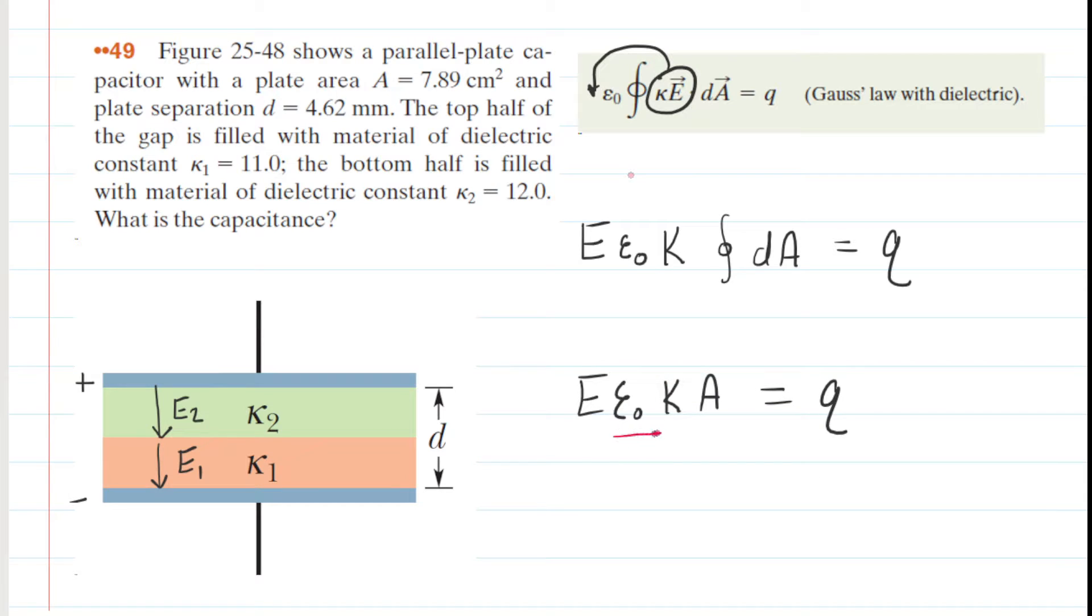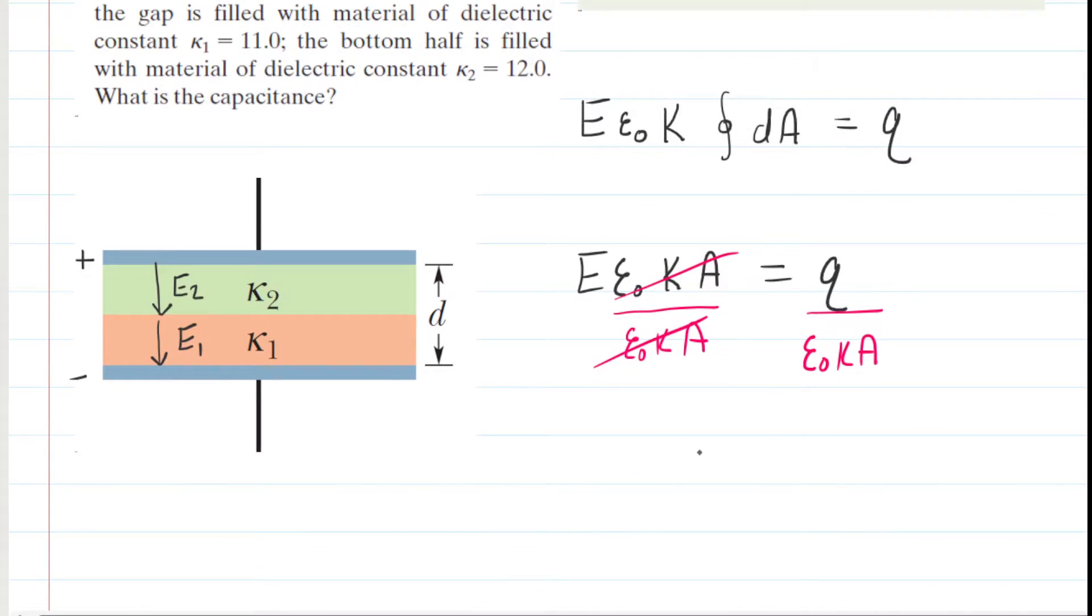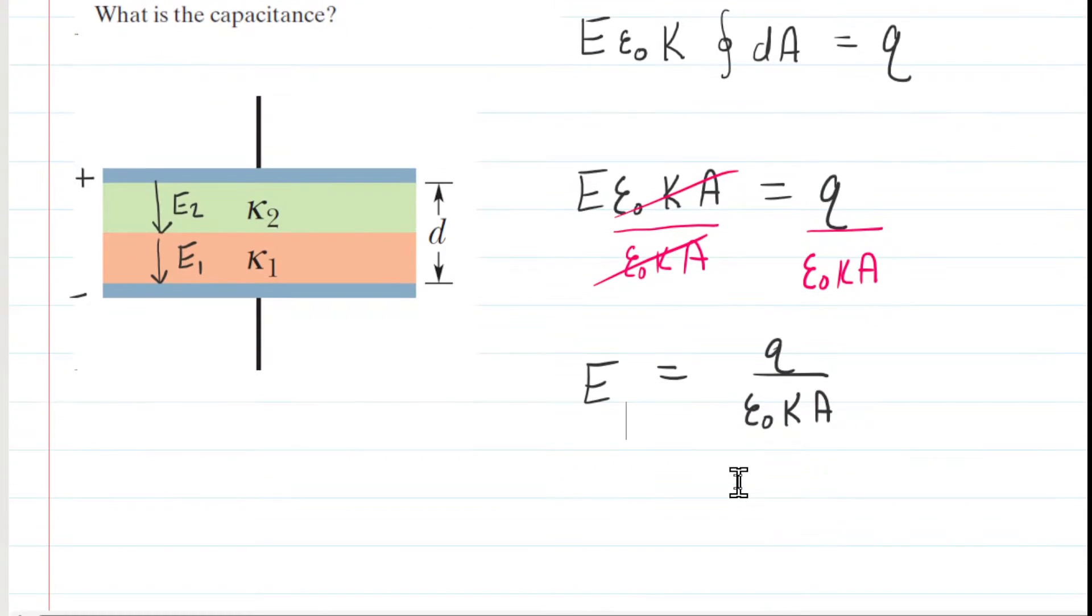What we want to do is solve for the electric field magnitude. So we're going to divide both sides of the equation by epsilon, kappa, area, which now gives us the following expression for each electric field. So for electric field 2, we'll end up putting a subscript 2 on the electric field as well as kappa, and then same thing with electric field 1, we'll use subscripts of 1. But before we do that, we need to understand another former concept that you probably picked up in Chapter 24.